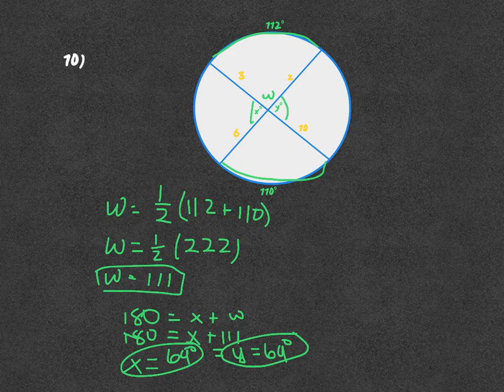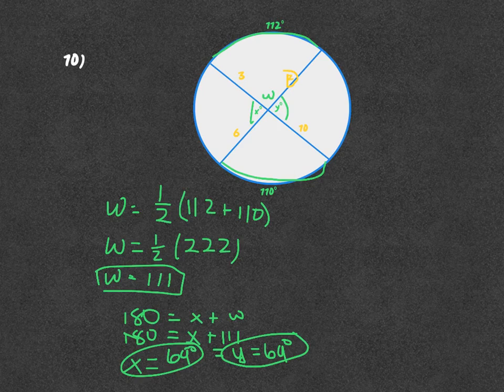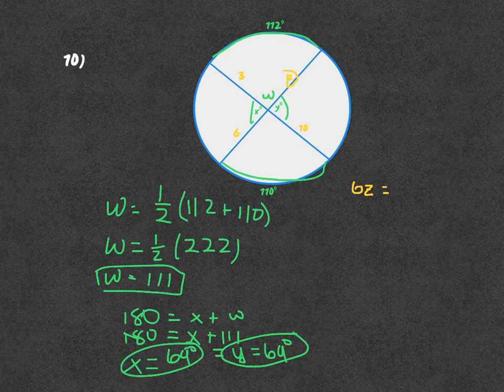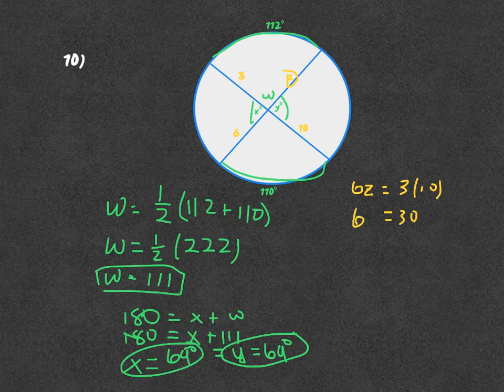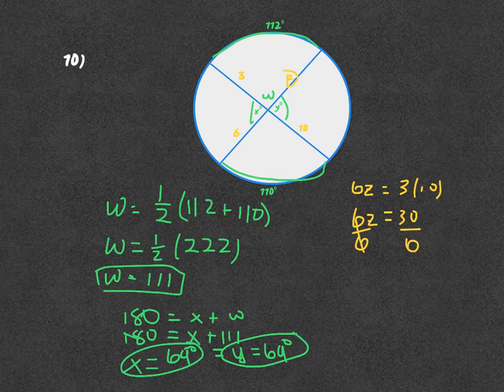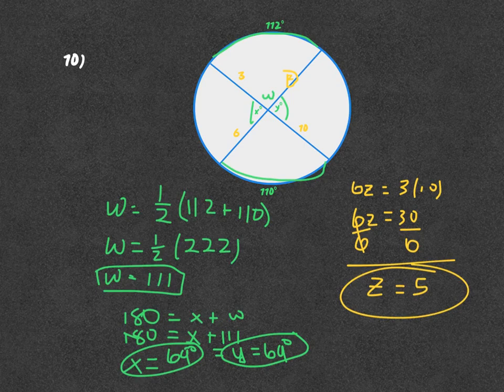And then we need to find the Z. The two chords are intersecting inside the circle, so 6Z equals 3 times 10. 3 times 10 is 30. 6Z equals 30, divided by the 6, and Z is equal to 5. So X is 69, Y is 69, and Z is 5.